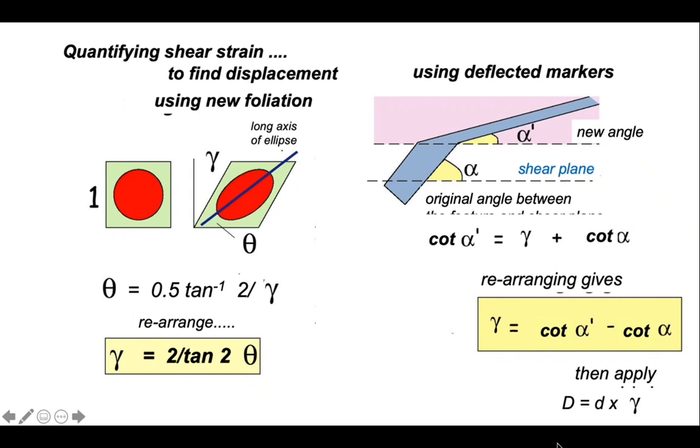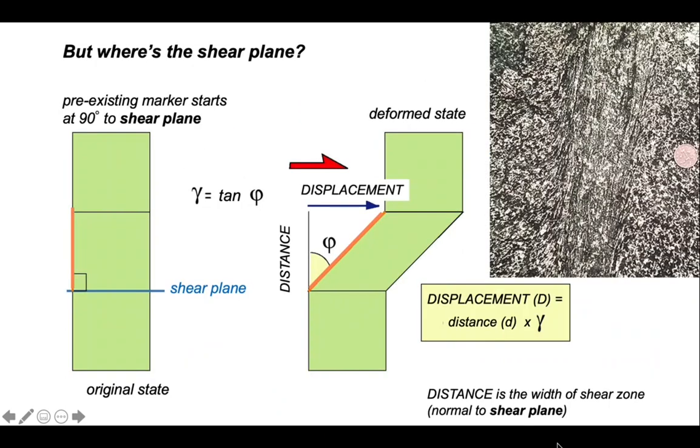So we've got two methods now for quantifying shear strain to find displacement. We can use the new foliation and we can use deflected pre-existing markers. But we still have to do one more thing. These methods rely on making measurements of either the pre-existing marker or the new shape fabric relative to the shear plane.